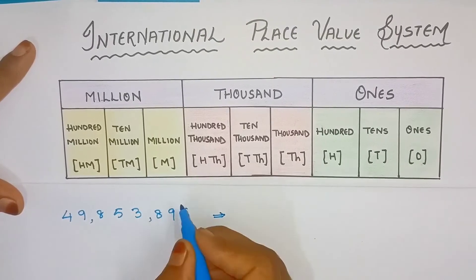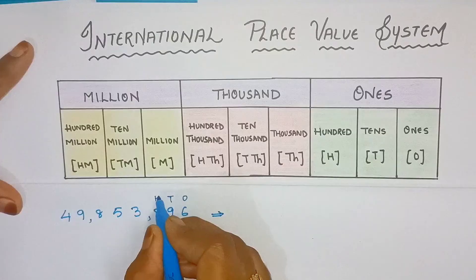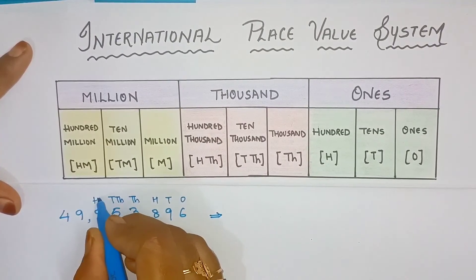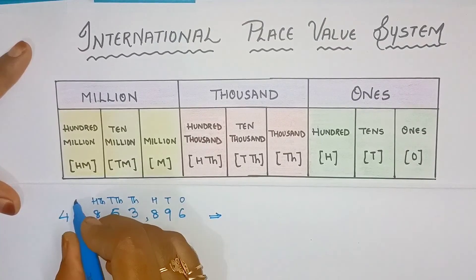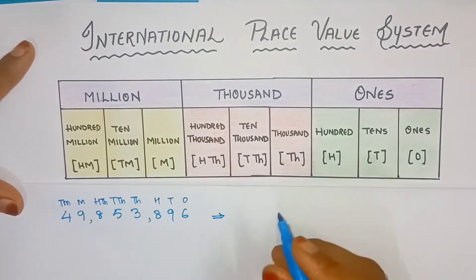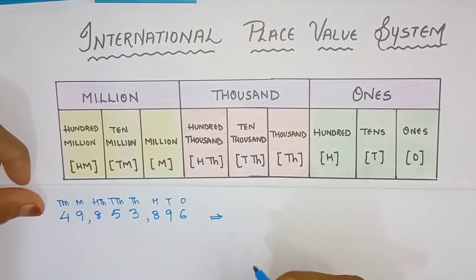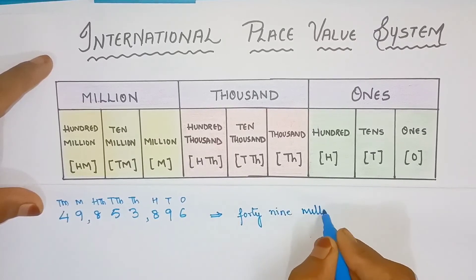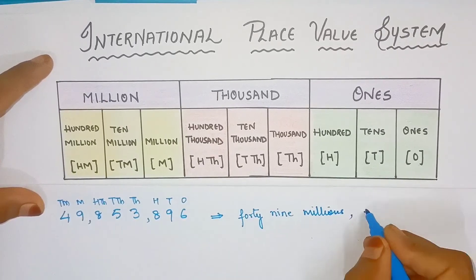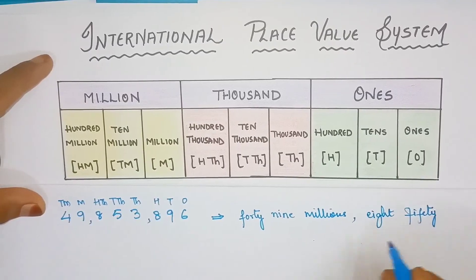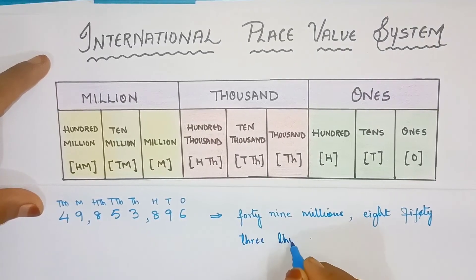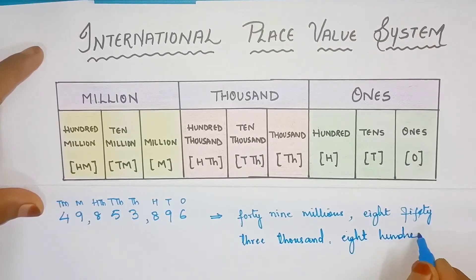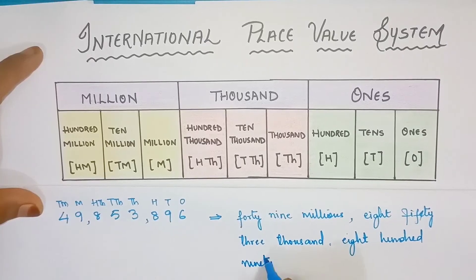So, our number will be: ones, tens, hundreds, thousand, Ten Thousand, Hundred Thousand, Million and this one is ten million. So, now our number will be in number name: Forty-nine millions, eight hundred fifty-three thousand, eight hundred and ninety-six.